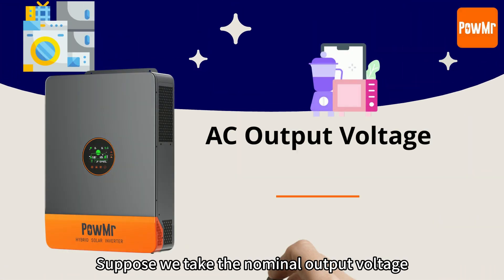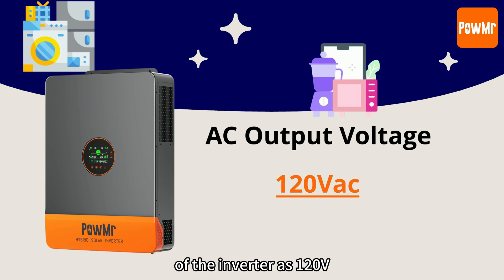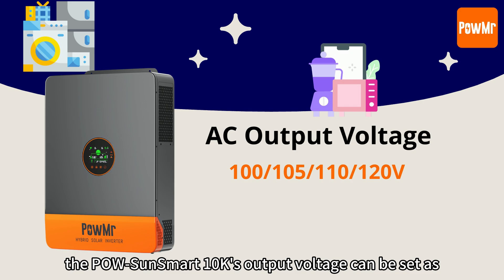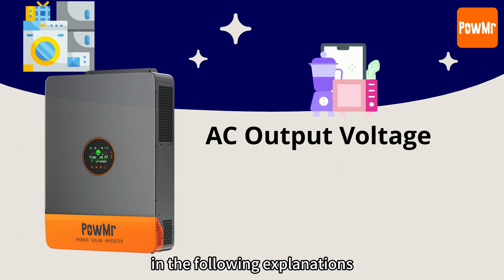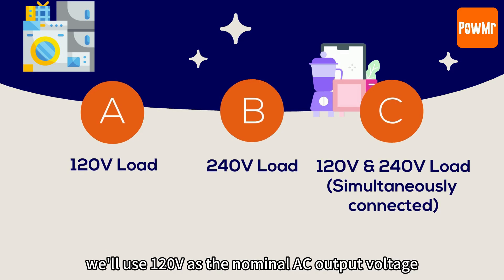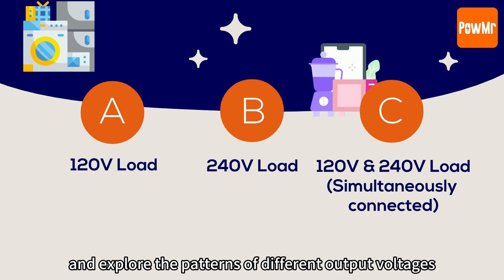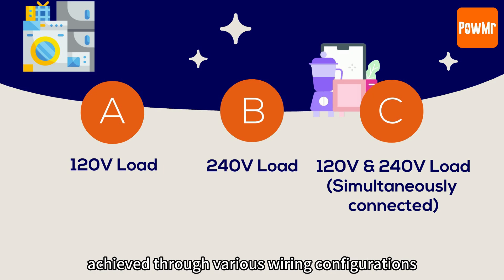Suppose we take the nominal output voltage of the inverter as 120V. By the way, the Pogson Smart 10K's output voltage can be set as 100, 185, 110, or 120V. So in the following explanations, we will use 120V as the nominal AC output voltage and explore the patterns of different output voltages achieved through the various wiring configurations.